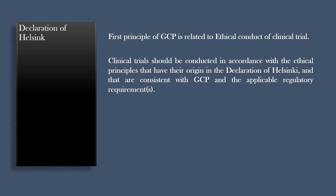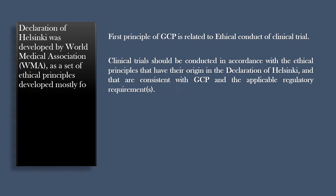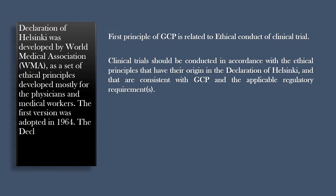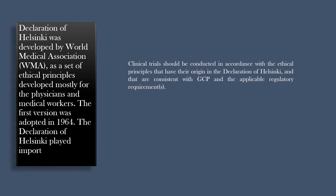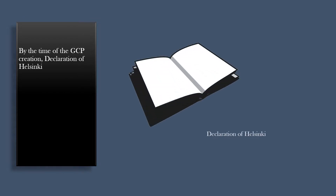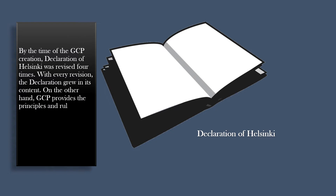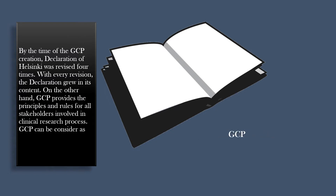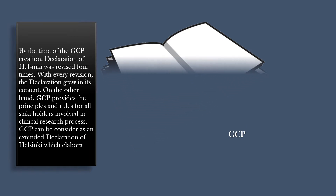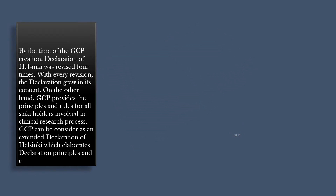The Declaration of Helsinki was developed by the World Medical Association, WMA, as a set of ethical principles developed mostly for physicians and medical workers. The first version was adopted in 1964. It played an important role in the development of GCP. By the time of the GCP creation, the Declaration of Helsinki had been revised four times, growing in content with every revision. GCP provides principles and rules for all stakeholders involved in clinical research, and can be considered as an extended Declaration of Helsinki, elaborating its principles and conclusions in more detail.